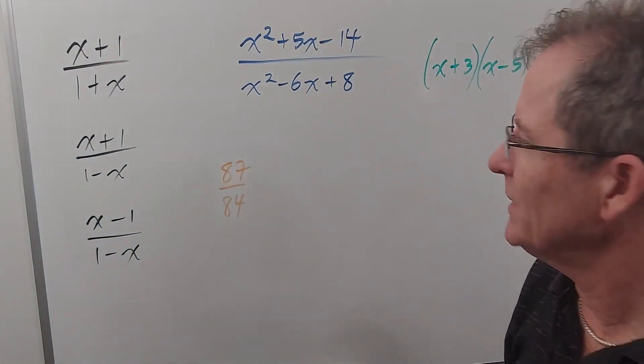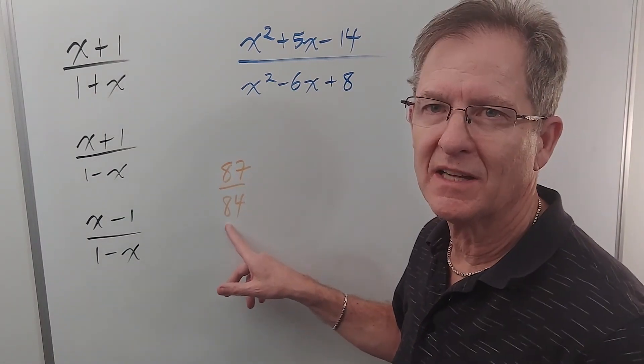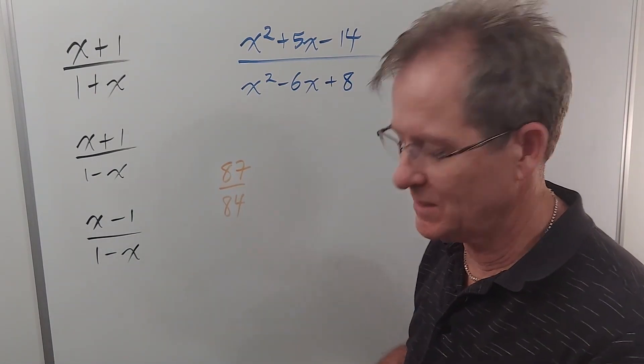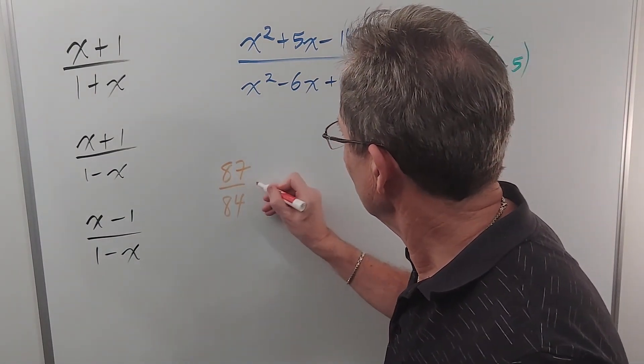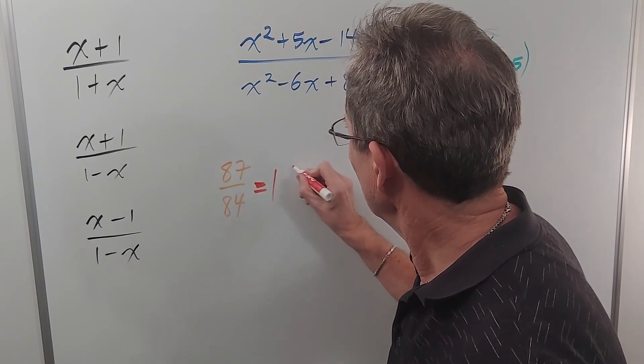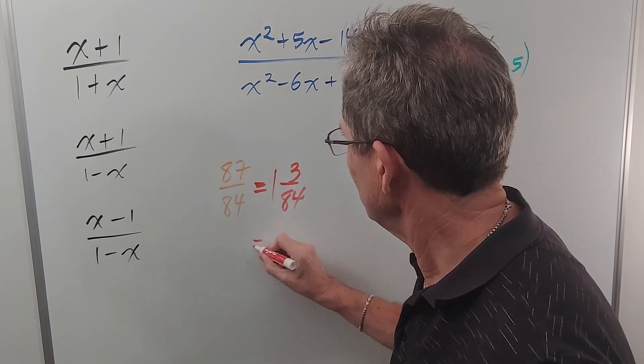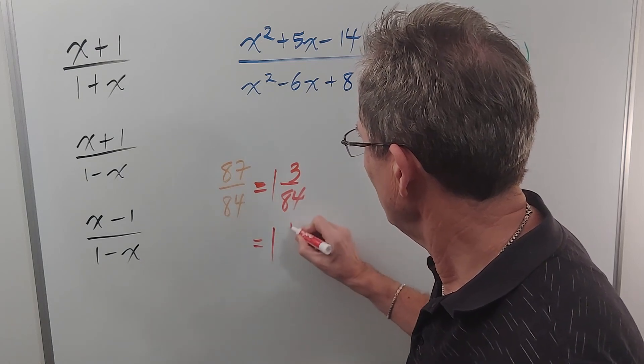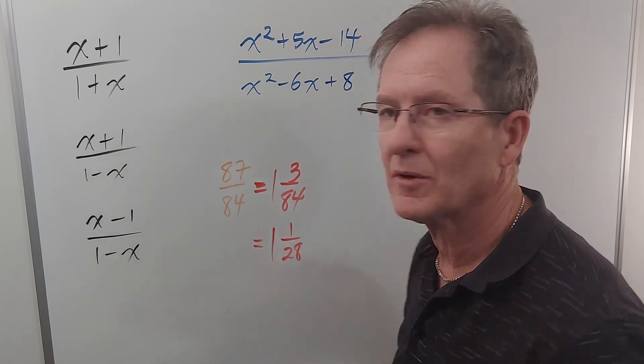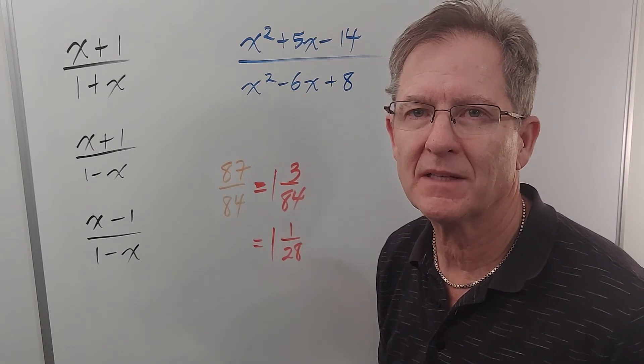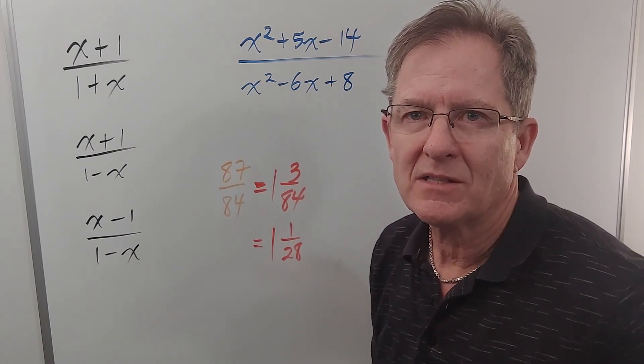All right, in part four I ended up with this improper fraction 87 over 84, which I did simplify to one and three over 84, but I neglected to reduce this fraction. So I should have had one and one over 28, as a viewer pointed out. I apologize for that mistake. Now back to rational expressions.